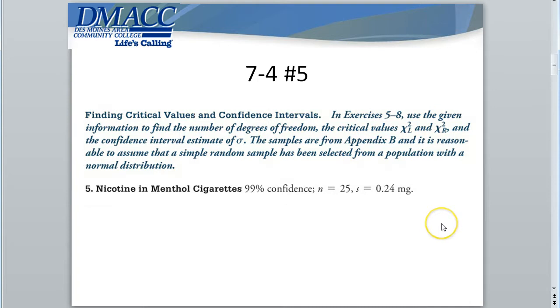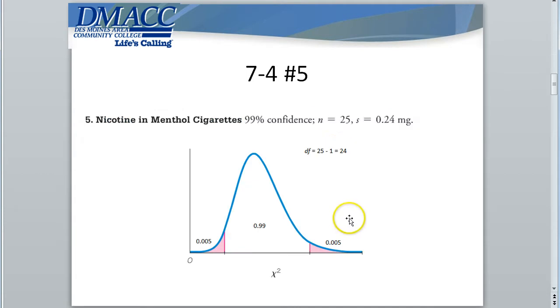Here, we're asked to find a confidence interval estimate for the nicotine and menthol cigarettes. We want to be 99% confident using a sample size of 25 that gives us a sample standard deviation of 0.24 milligrams. Now, just to find the critical values, we need to identify the degrees of freedom, which is always one less for a single sample of the sample size. So 25 minus 1 is 24.